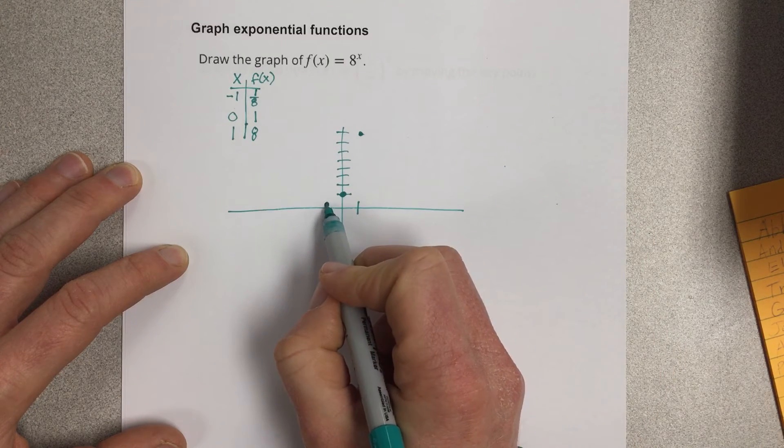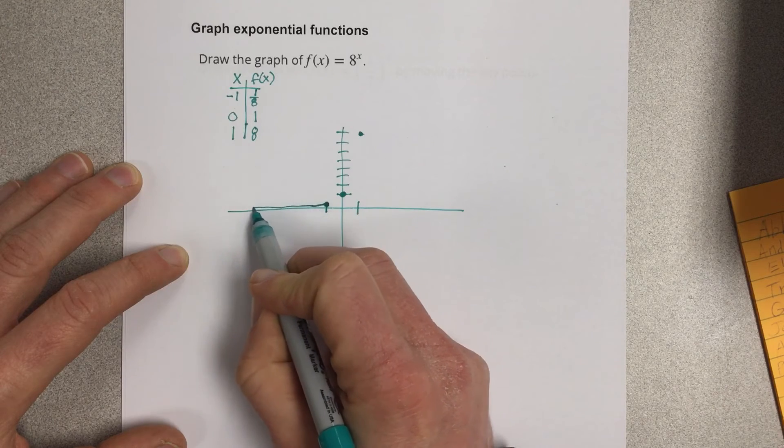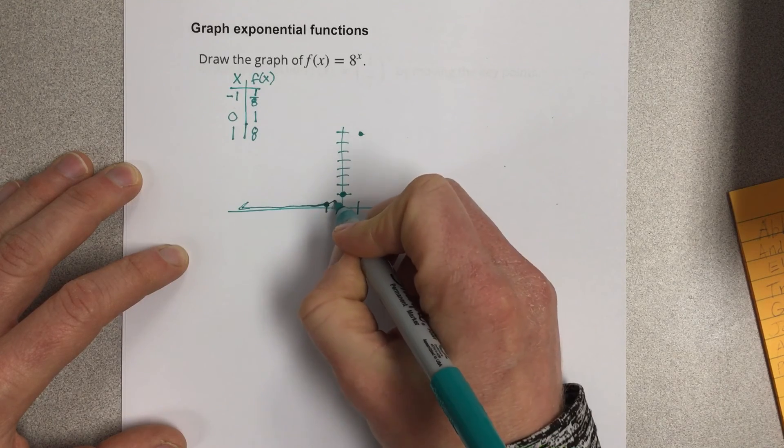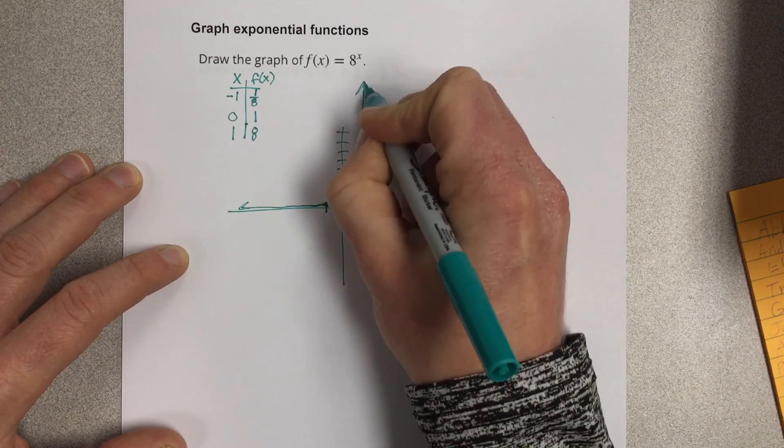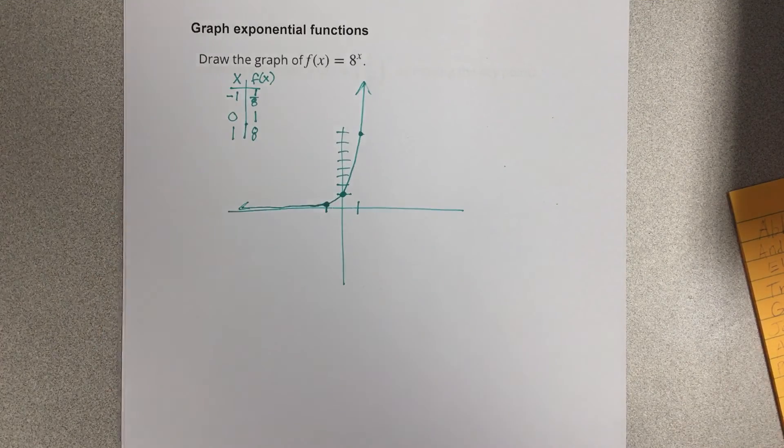Now this, I know it approaches the x-axis, so I'm gonna have a line that looks like that. And this one's going to curve upwards like so. And that's the graph of the exponential function.